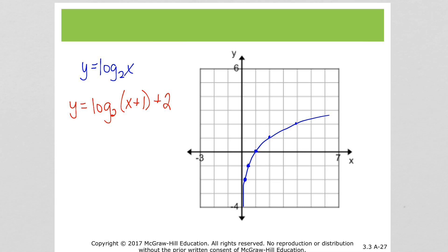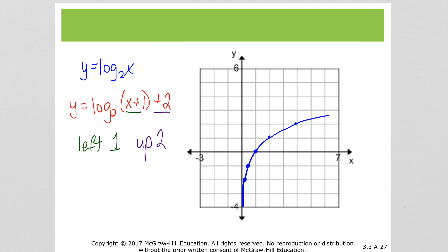So what I'm going to do is copy and paste this graph and move it — left 1 and up 2. Once I've finished, my function log base 2 of (x + 1) + 2 looks like this. And I can make the parent function dashed since it's not the actual function.